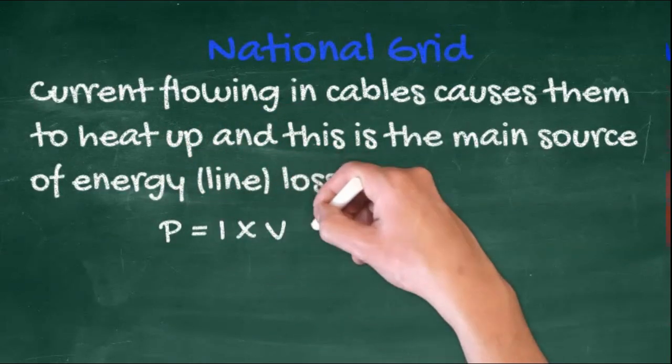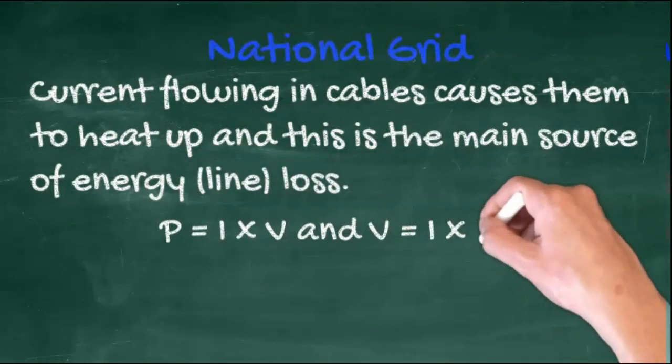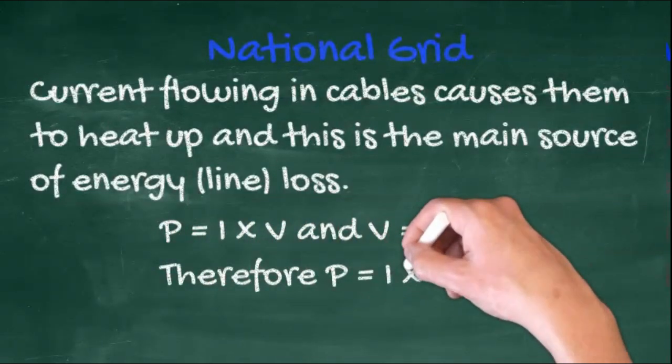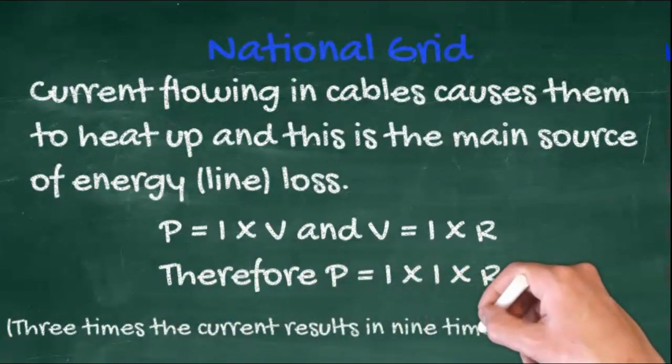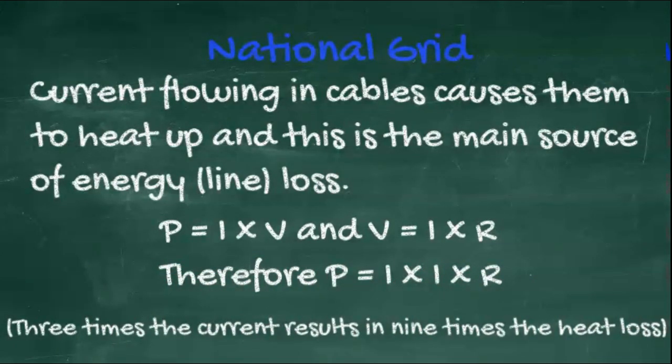Power is amps times volts, and v equals ir. Therefore power is amps times amps times resistance. In other words, p equals i squared r. So three times the current results in nine times the power loss.